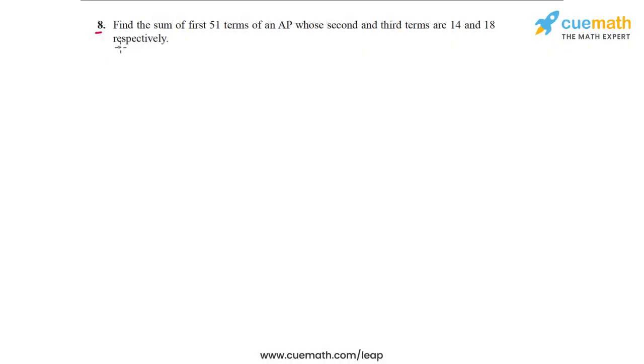In question 8 of the exercise, here is what the problem statement says. Find the sum of the first 51 terms of an AP whose second and third terms are 14 and 18 respectively.